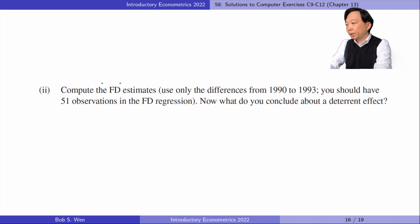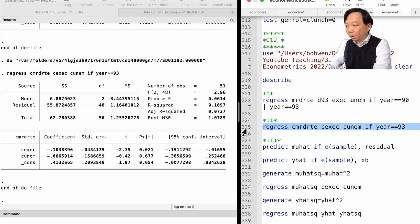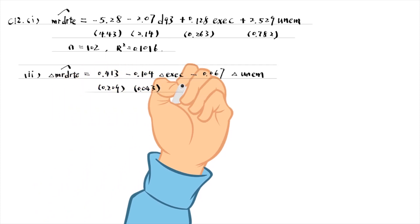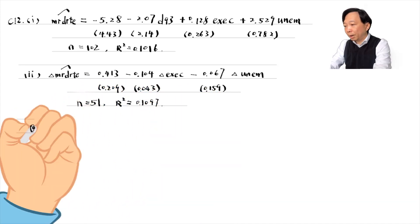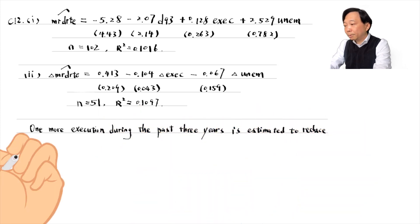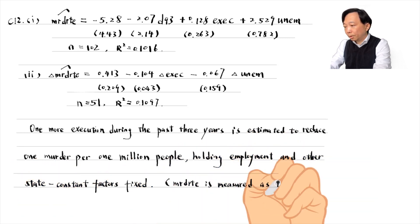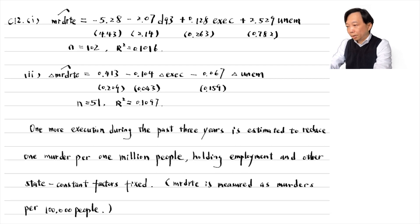In part 2, we compute the first difference estimates. Now, what do you conclude about a deterrent effect? The first difference regression gives an estimate of minus 0.104, meaning that one more execution during the past three years is estimated to reduce murders by 0.1 per 1 million people, holding employment and other state constant factors fixed. The effect is statistically different from 0 at the 5% level. Keep in mind that the first difference regression has controlled for the state fixed effects.